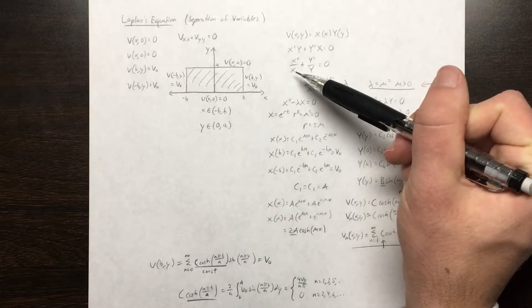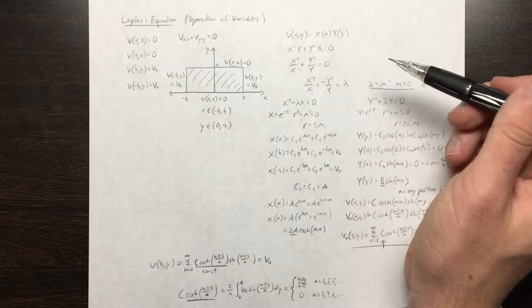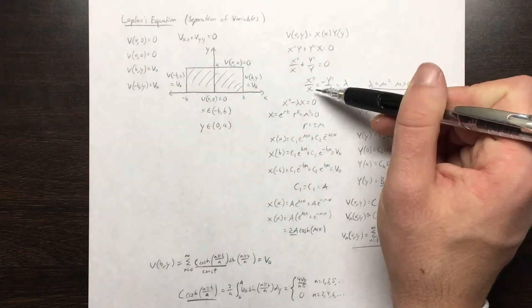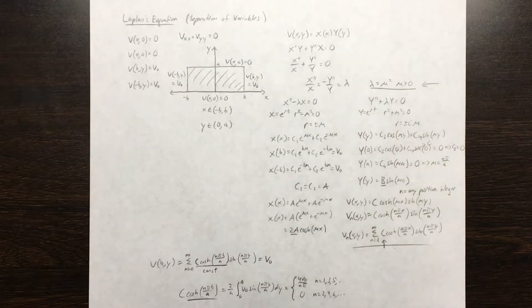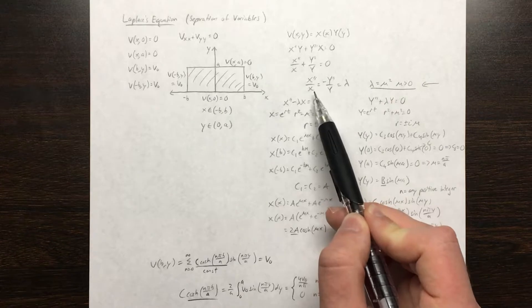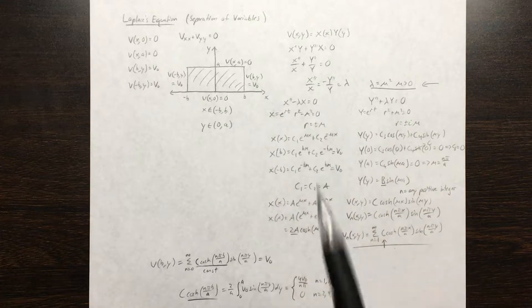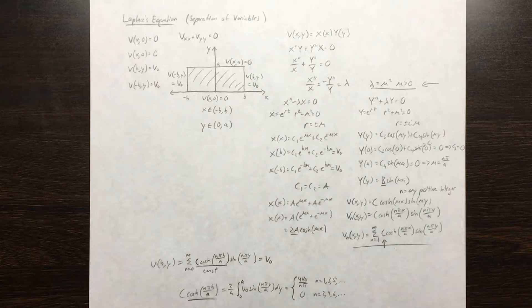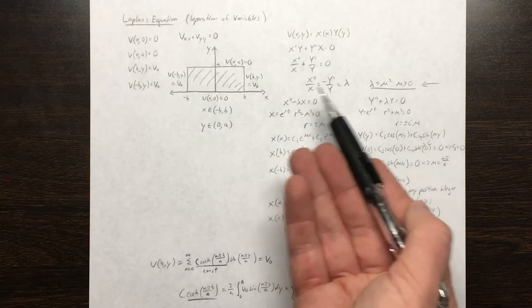The first term has only x's and the second term has only y's. Subtracting the Y term to the other side, we get X''/X equals negative Y''/Y. This must equal a constant, which I'll call lambda, because one side depends only on x and the other only on y — if one side changed, it would have to equal the other, so both sides must equal a constant.